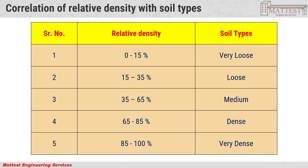Correlation of Relative Density with Soil Types: Relative Density 0–15% — Very Loose. Relative Density 15–35% — Loose. Relative Density 35–65% — Medium. Relative Density 65–85% — Dense. Relative Density 85–100% — Very Dense.